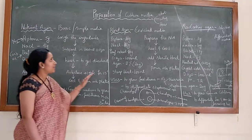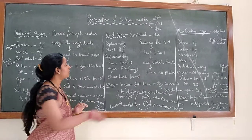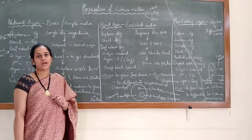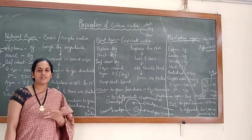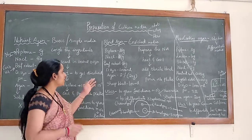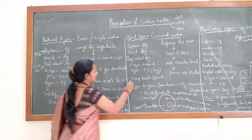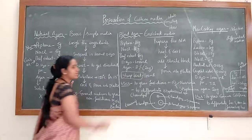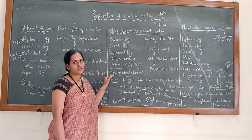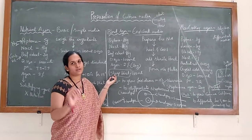Now coming to the next agar medium — blood agar. Blood agar comes under the example of enriched media. Enriched media is where we enrich the media by adding a special nutrient. Here, you can see the composition is similar to nutrient agar except for the addition of blood — sheep blood is used here.